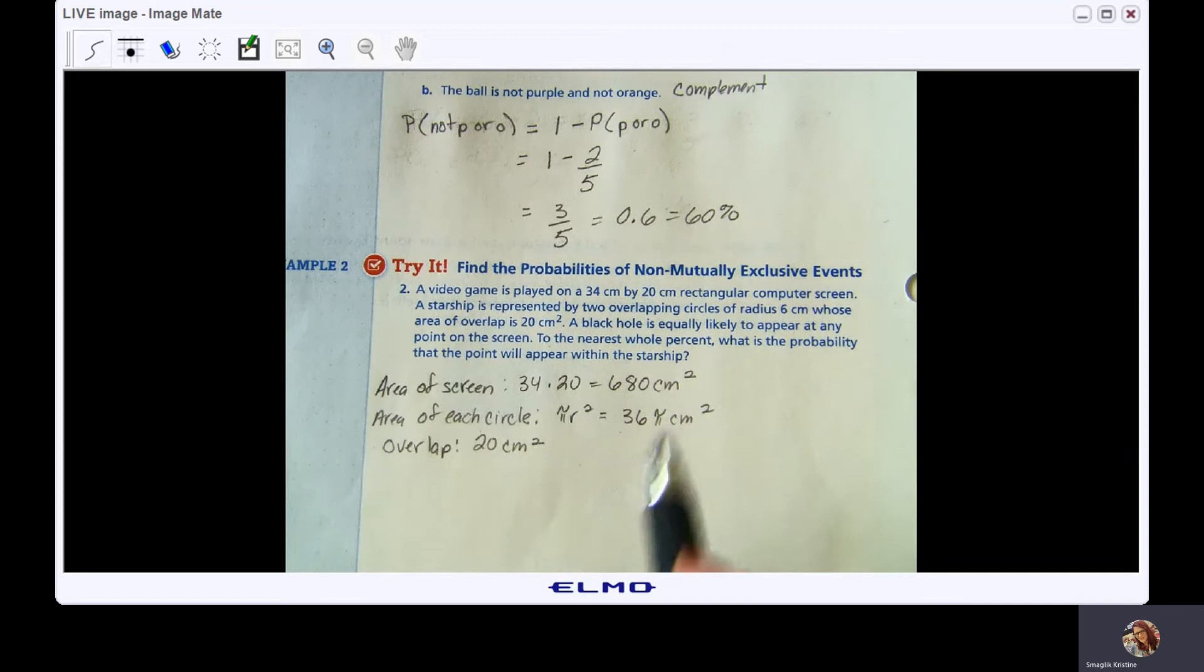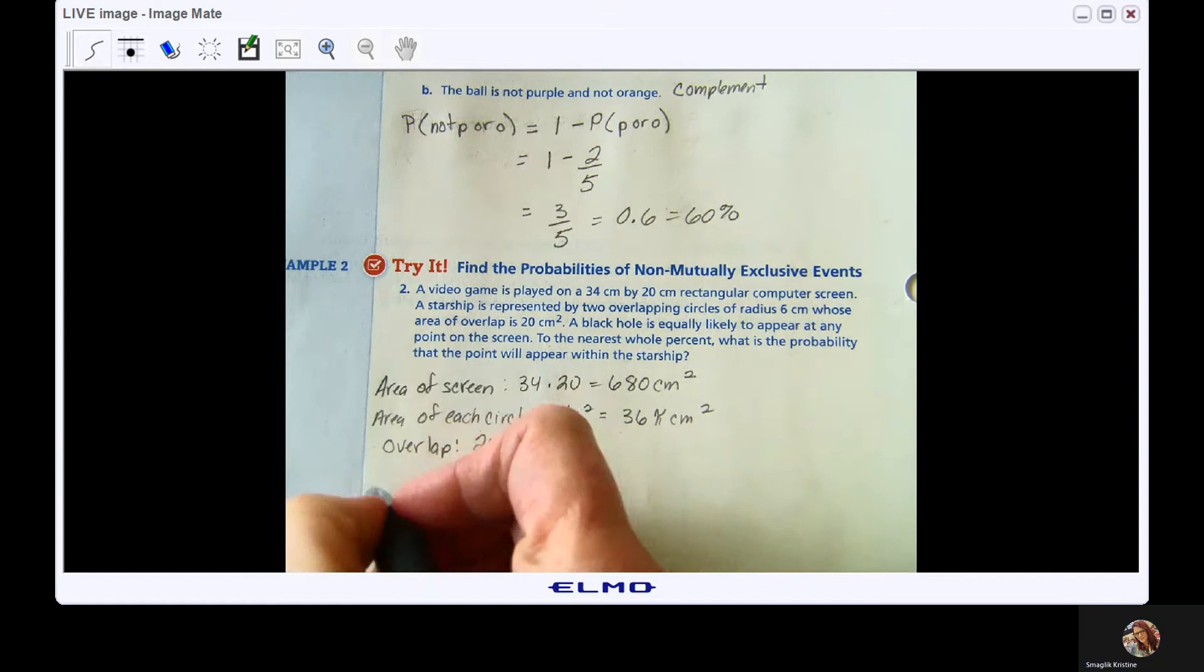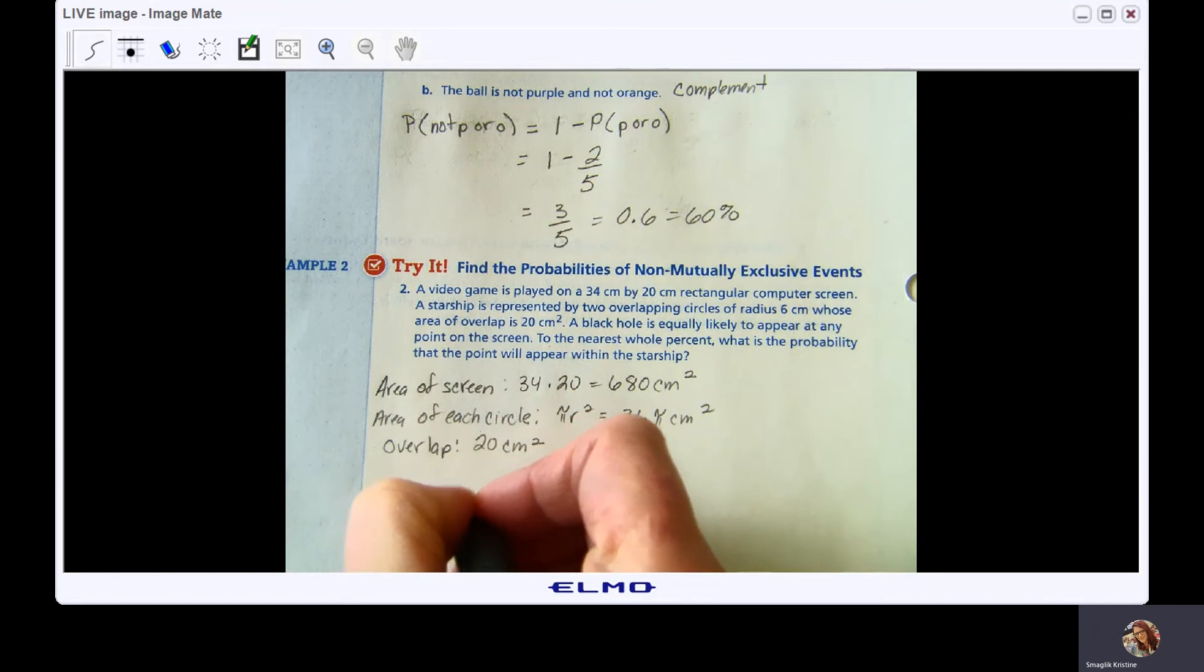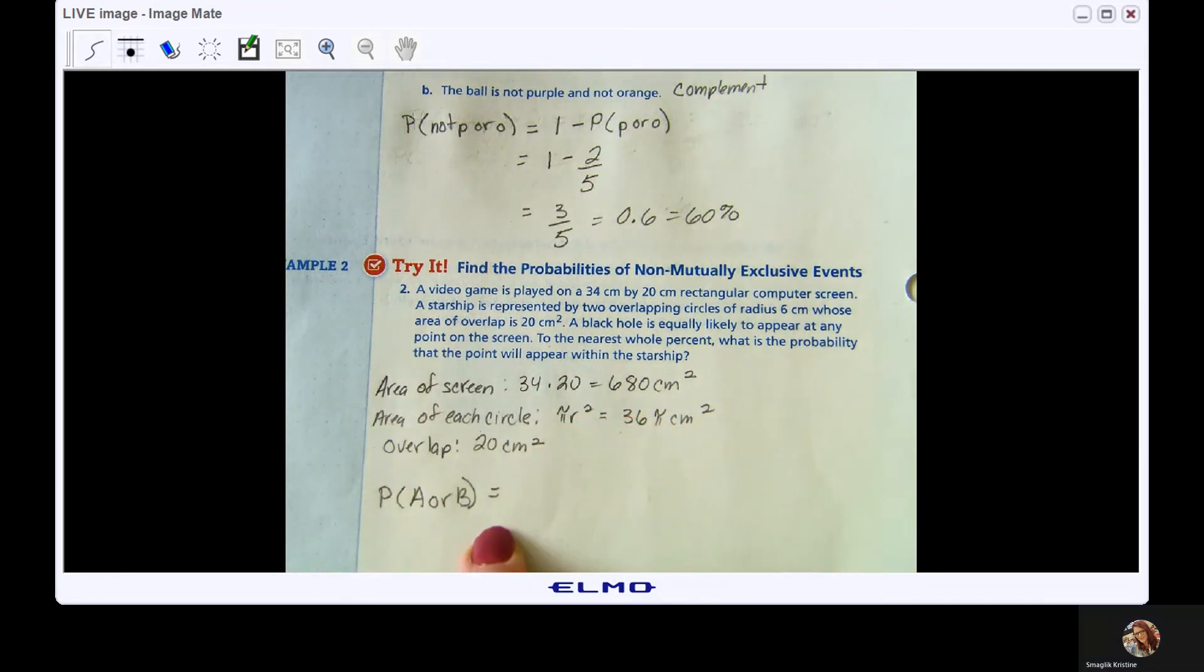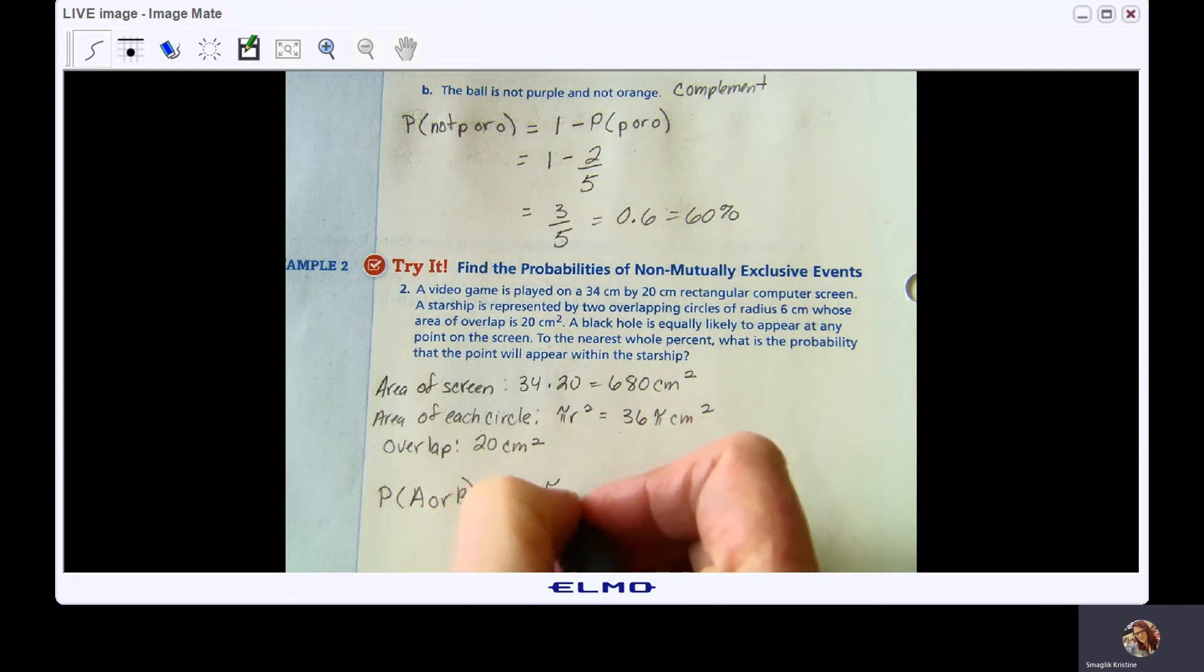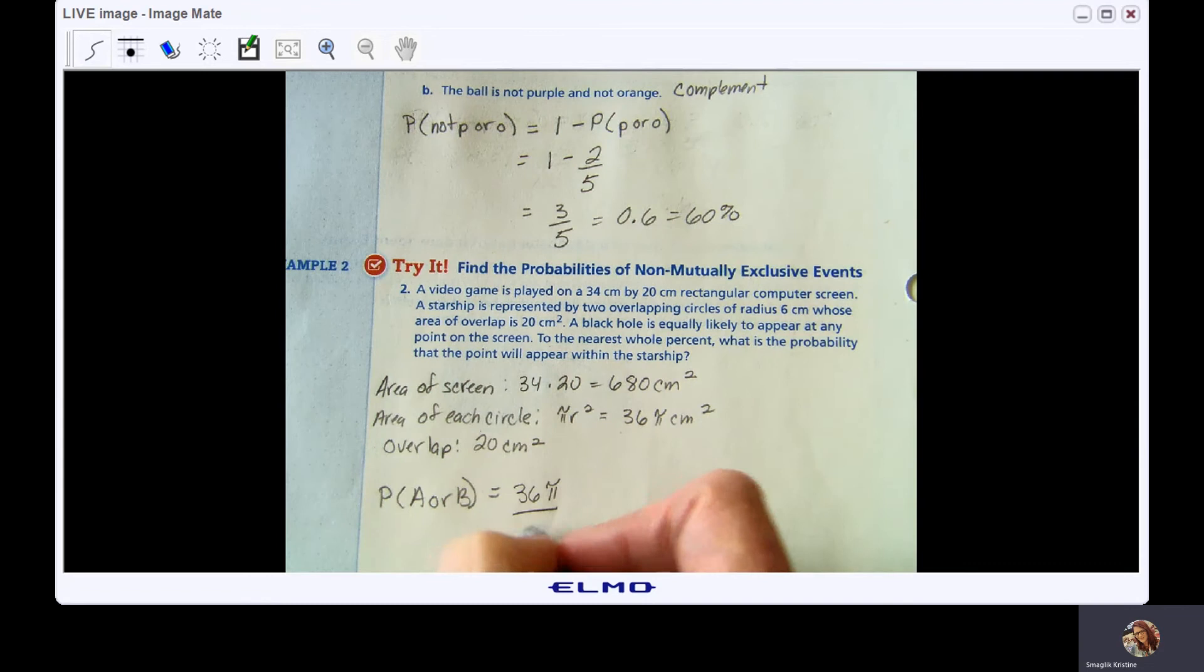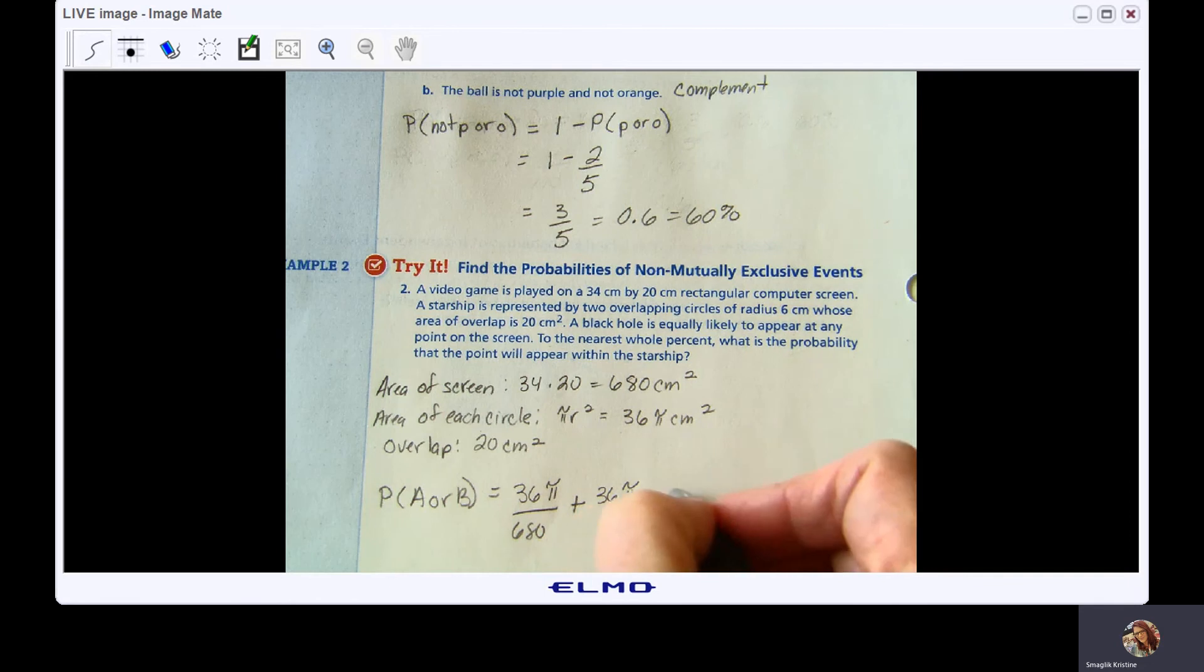So again, we have the possibility of shared outcomes. This is non-mutually exclusive. So when we do probability of A or B happening, probability of each circle. So I've got two of these circles, 36π over my total was 680, plus the other circle was also 36π over 680, and now I need to subtract the overlap, which is 20 over 680.